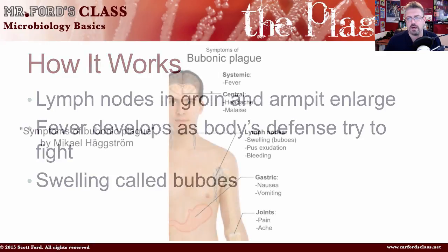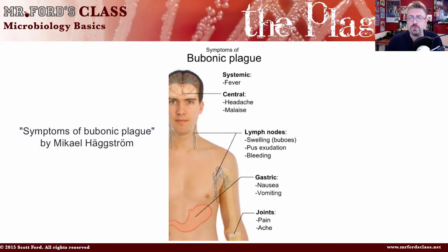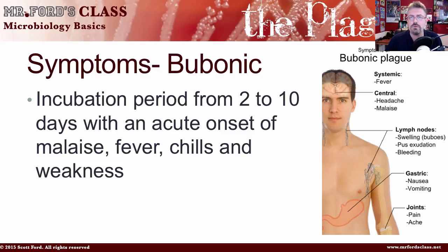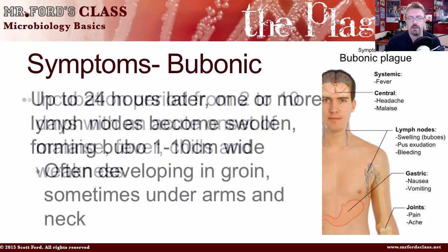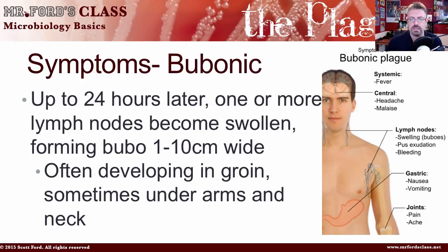The symptoms of bubonic plague: the incubation period is 2 to 10 days, with an acute onset of malaise — meaning exhaustion — fever, chills, and weakness. Up to 24 hours later, one or more lymph nodes become swollen, forming the buboes, which are between 1 to 10 centimeters wide. These often develop in the groin, and sometimes under the arm and on the neck.